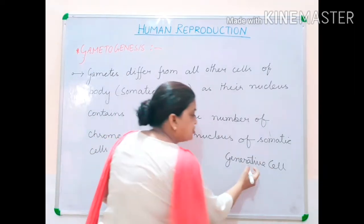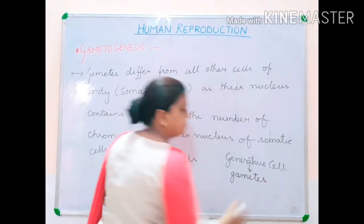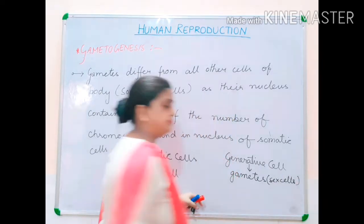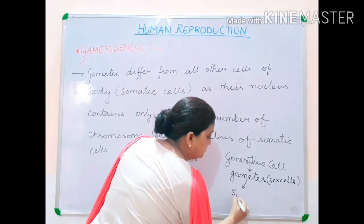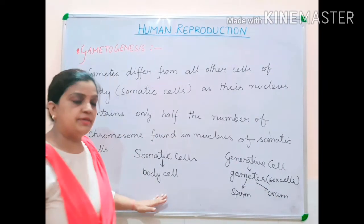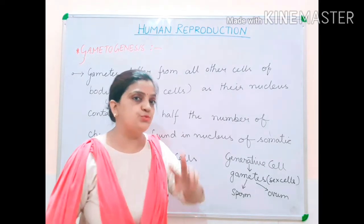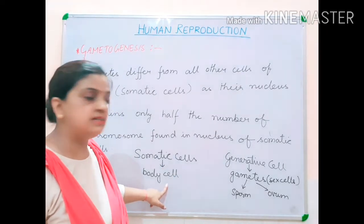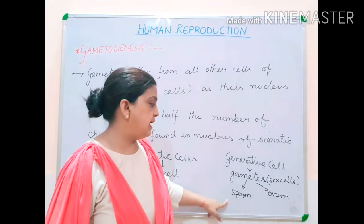Generative cells are responsible for the formation of gametes. Gametes are sex cells — there are two types: sperm and ovum. So every living organism is made up of two types of cells: somatic cells and generative cells. Somatic cells make body parts; generative cells make the sex cells, reproductive cells, or gametes like sperms and ovum.